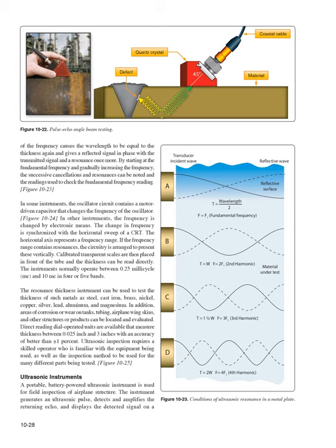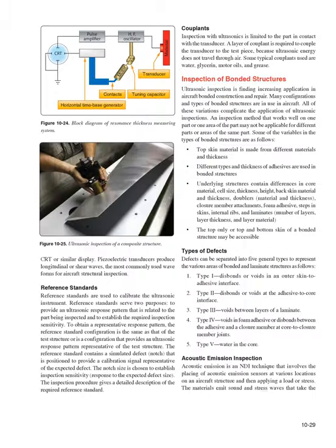The resonance thickness instrument can be used to test the thickness of metals such as steel, cast iron, brass, nickel, copper, silver, lead, aluminum, and magnesium. Areas of corrosion or wear on tanks, tubing, airplane wing skins, and other structures can also be located and evaluated. Direct reading dial operated units are available measuring thickness between 0.025 inch and 3 inches with accuracy better than plus or minus one percent. Ultrasonic inspection requires a skilled operator familiar with the equipment and inspection method. Portable, battery-powered ultrasonic instruments are used for field inspection. Piezoelectric transducers produce longitudinal or shear waves, the most commonly used waveforms for aircraft structural inspection.